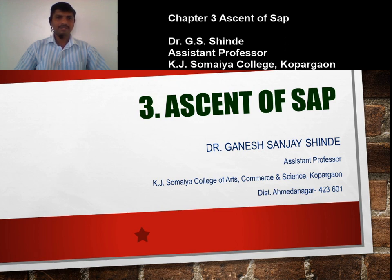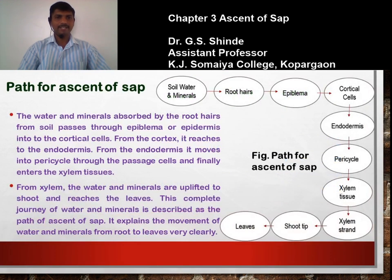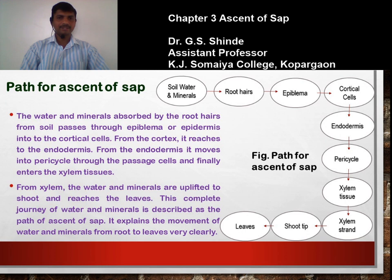The path for ascent of sap involves water and minerals absorbed by the root hairs from soil, which then pass through the epiblema or epidermis into the cortical cells. The water present in the soil along with dissolved mineral nutrients is absorbed by the root hairs. Root hair is a single cell. From the root hair, water enters the epiblema or epidermis, and from the epidermis water enters into the cortical cells.